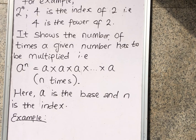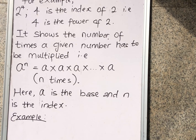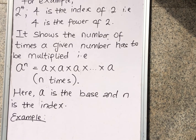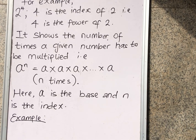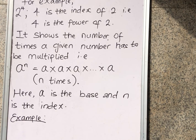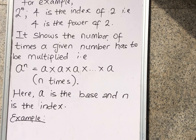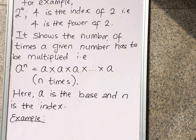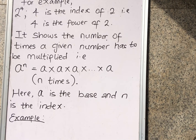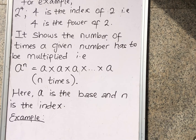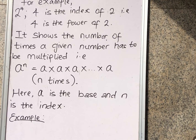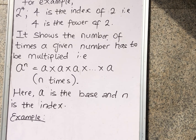Wherever you see a number down, it's called the base. And the one that is up is called the index, which we also call the power, which can also be called an exponent. So wherever you see the words exponent, power, index, or indices, I'm sure you can now tell what they mean.